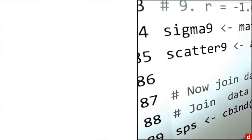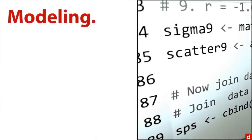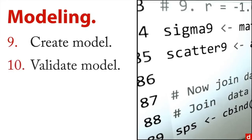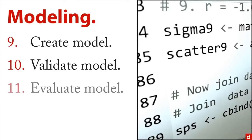The third group is modeling, or statistical modeling. This is where you actually create the statistical model — for instance, a regression analysis or a neural network. Once you create your model, you have to validate it, perhaps with a holdout validation or even a small replication. You also need to evaluate the model: once you know it's accurate, what does it actually mean and how much does it tell you?